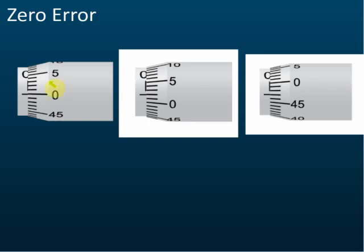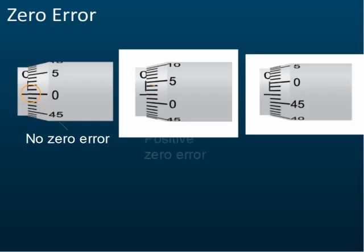Zero error: if the zero mark from the thimble scale coincides with the straight line in the main scale, then there is no zero error.